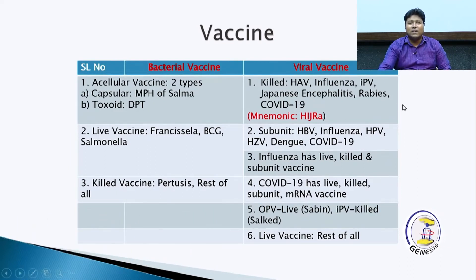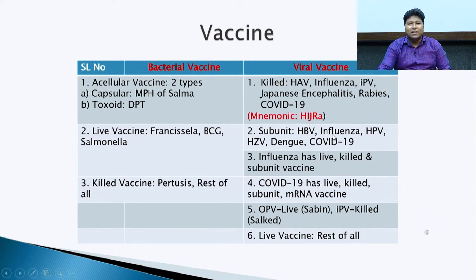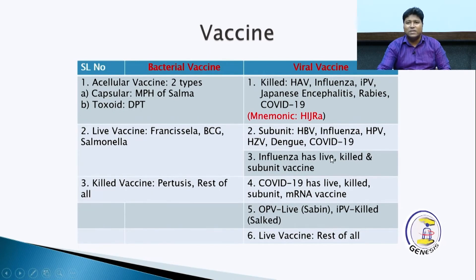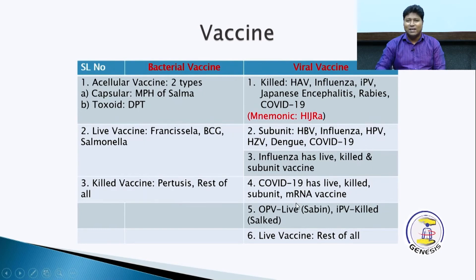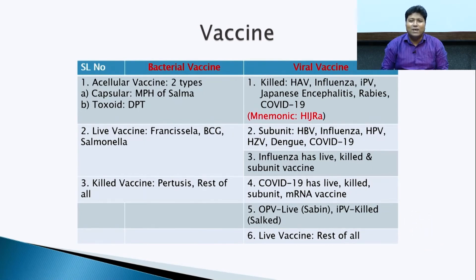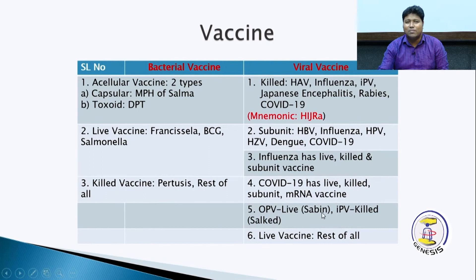We will take a look at the influenza vaccine. Influenza has live vaccine and killed vaccine types. In COVID-19, we have live vaccine, killed vaccine, and mRNA. For oral polio, they have a live vaccine. For inactivated polio, they have a killed vaccine.